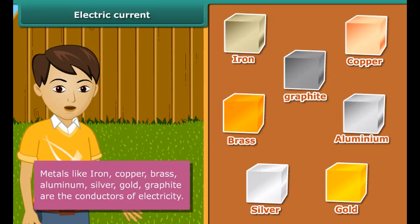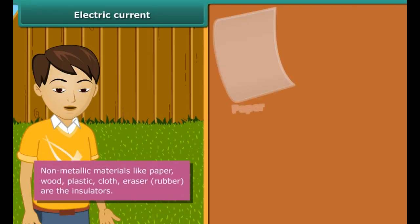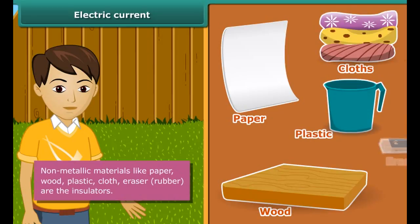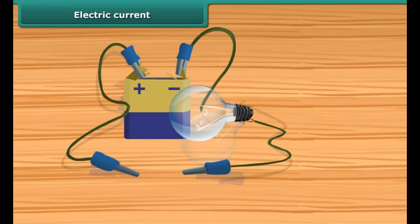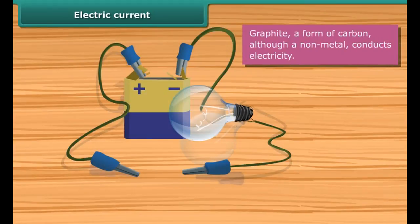A cell is a simple device in which chemical energy is changed into electric energy. Some materials allow electric current to pass through them; others do not. The materials that allow electric current to pass through them are called conductors. Iron, copper, brass, aluminum, silver, gold, and graphite are conductors of electricity.